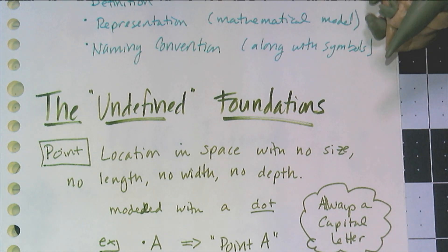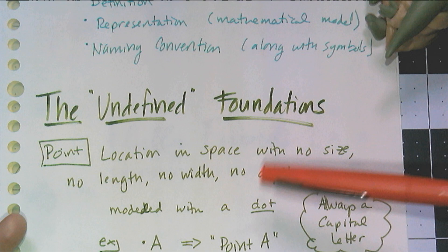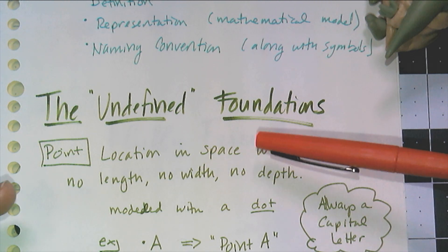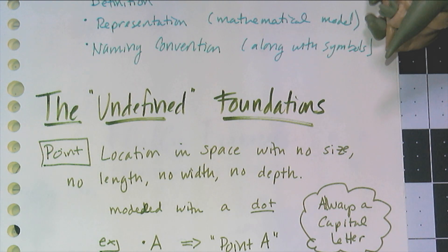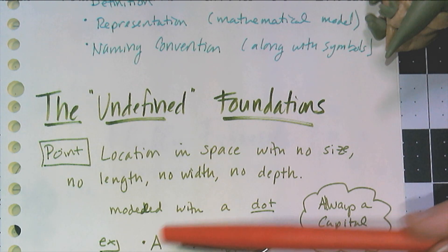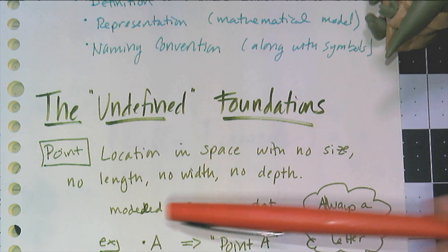The most basic element of geometry is the point. A point can be defined as a location in space with no size, no length, no width, no depth. It's modeled with a dot and we always name them with a capital letter. For example, dot A means that is point A.